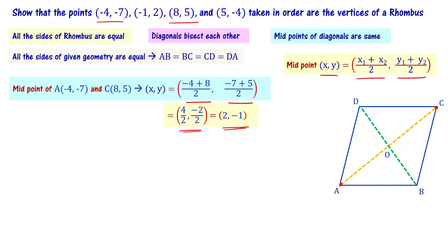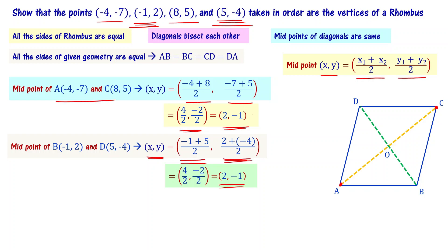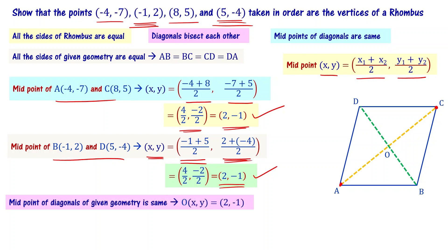Midpoint of AC is 2, minus 1. Now let's find the midpoint of BD. B is minus 1, 2 and D is 5, minus 4. Midpoint of BD equals (minus 1 plus 5) divided by 2, (2 plus 4 minus... minus 4 plus 2 divided by 2), giving 4 by 2, minus 2 by 2, which is 2, minus 1. The midpoint of AC is 2, minus 1 and the midpoint of BD is also 2, minus 1 — the midpoints of both diagonals are the same.